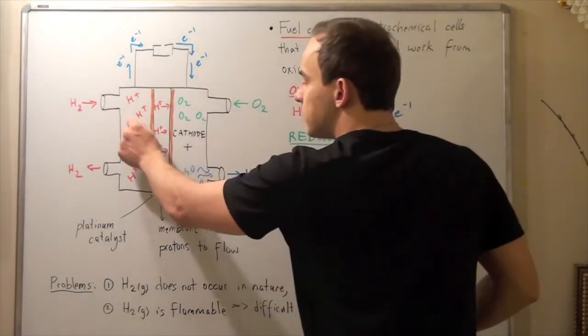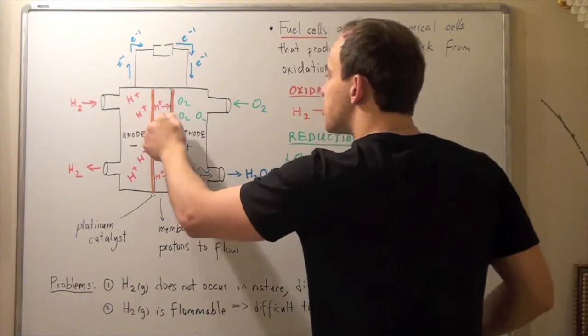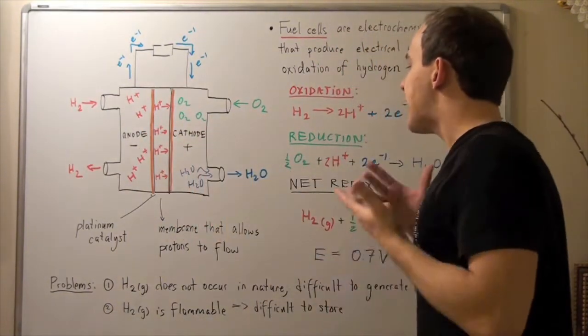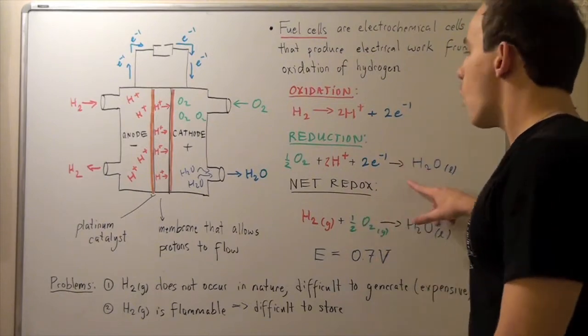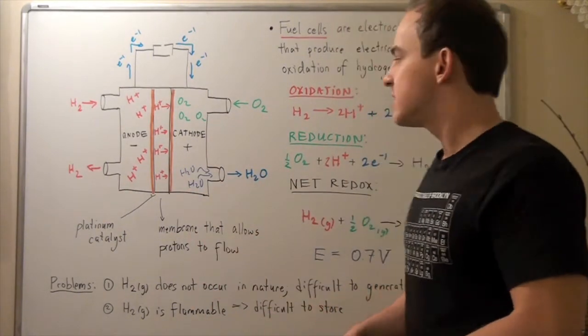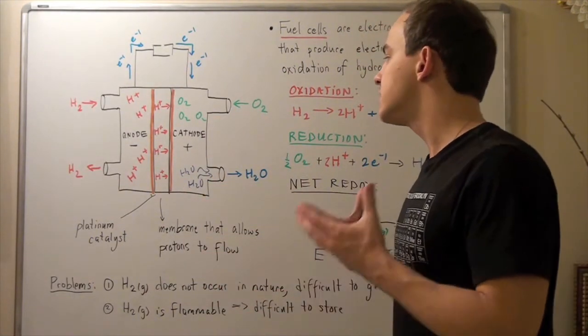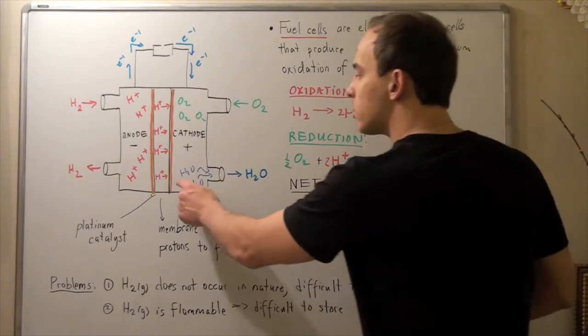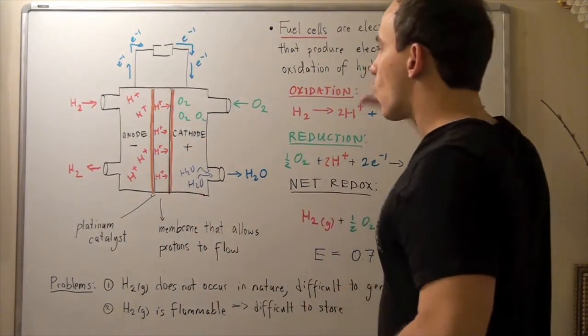And so these H-plus ions travel from the anode to the cathode. And when they reach this position, they react with the oxygen and the electrons forming water. Now, this water needs to be released somewhere because if the water remains, there's a buildup of water, and our cell would eventually stop functioning.